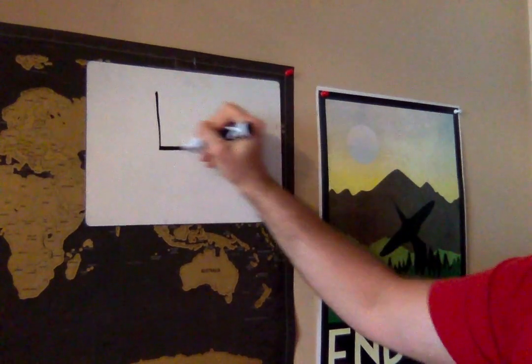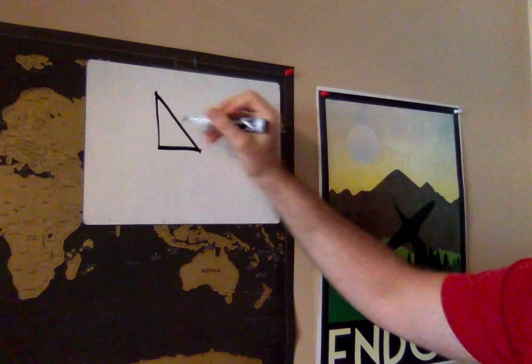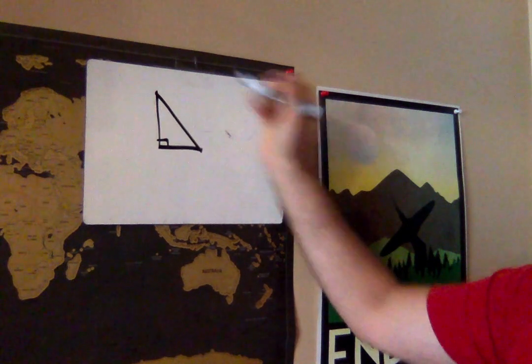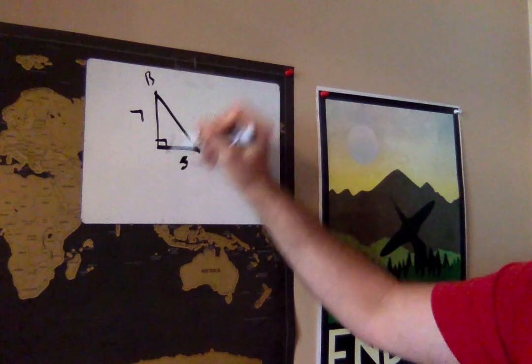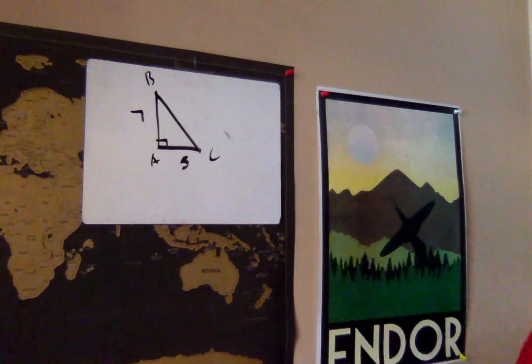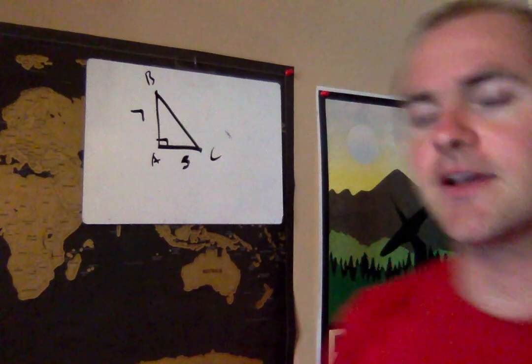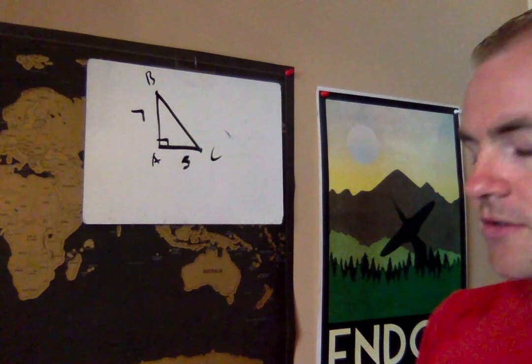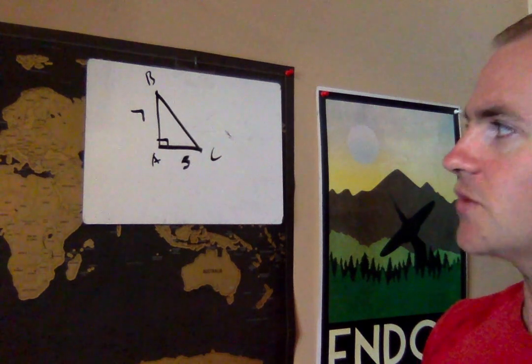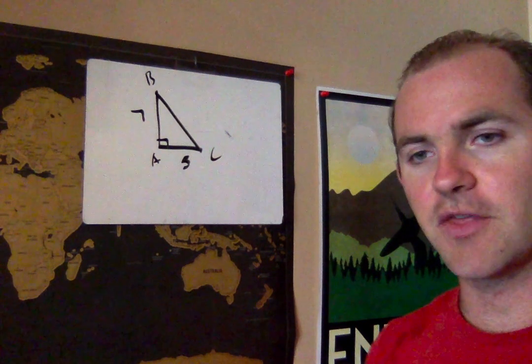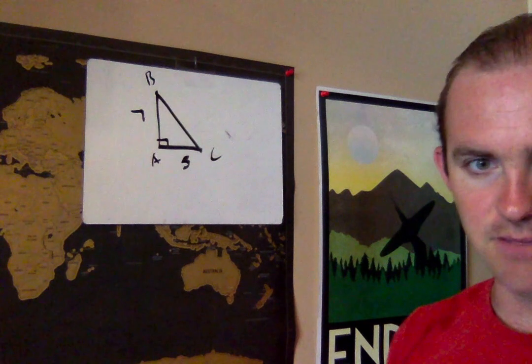Question number one gives you a right triangle, triangle ABC, and it looks something like this. There's a right angle, there's 7, 5, B, A, and C. Now the first thing they ask you to do is find BC. So let's think about the tools we have at our disposal. If I know two sides of a right triangle, what theorem can I use to find the third, the Pythagorean theorem?